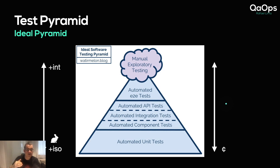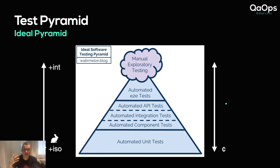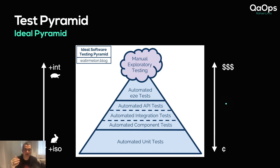As you go up the pyramid you have more integration and more reliability. One end-to-end test gives you more confidence than one unit test, but a single Selenium WebDriver test can easily take a minute, whereas in that same minute you can run hundreds of unit tests — each taking only milliseconds. So as you go up you are more integrated and slower. It takes more time to create and execute exploratory tests, requiring more human time and more machine resources, making it more expensive.